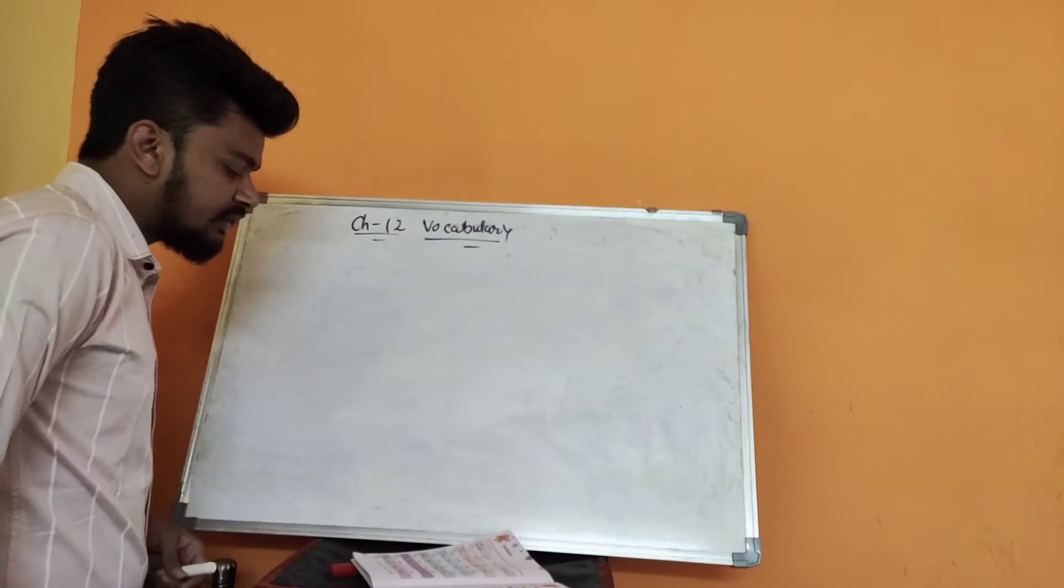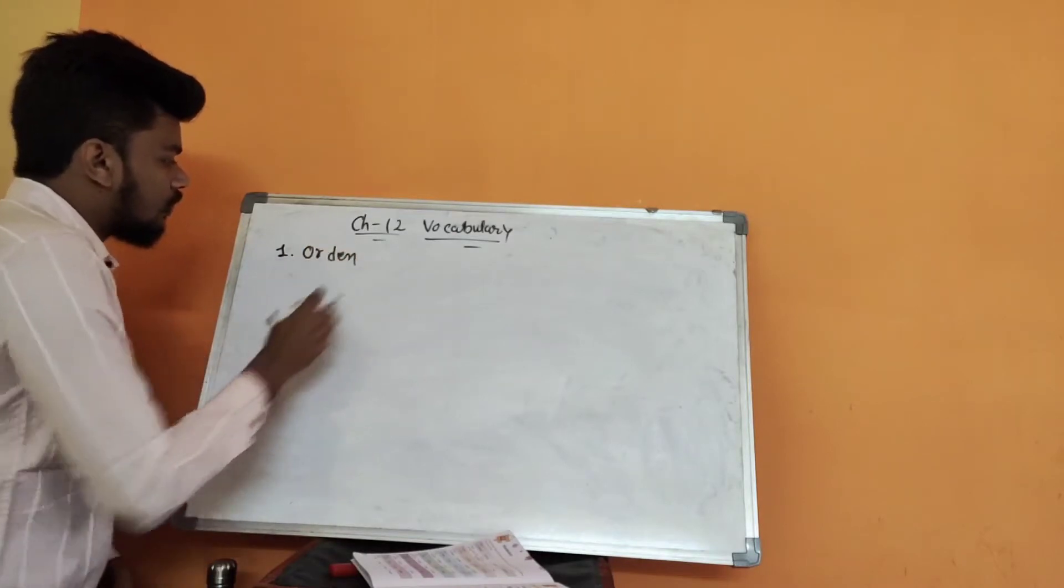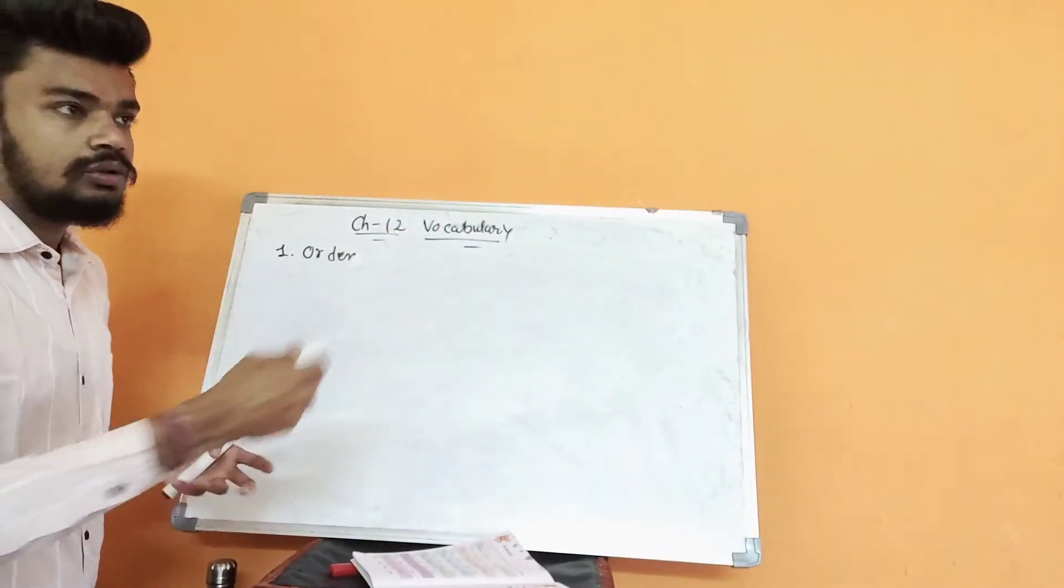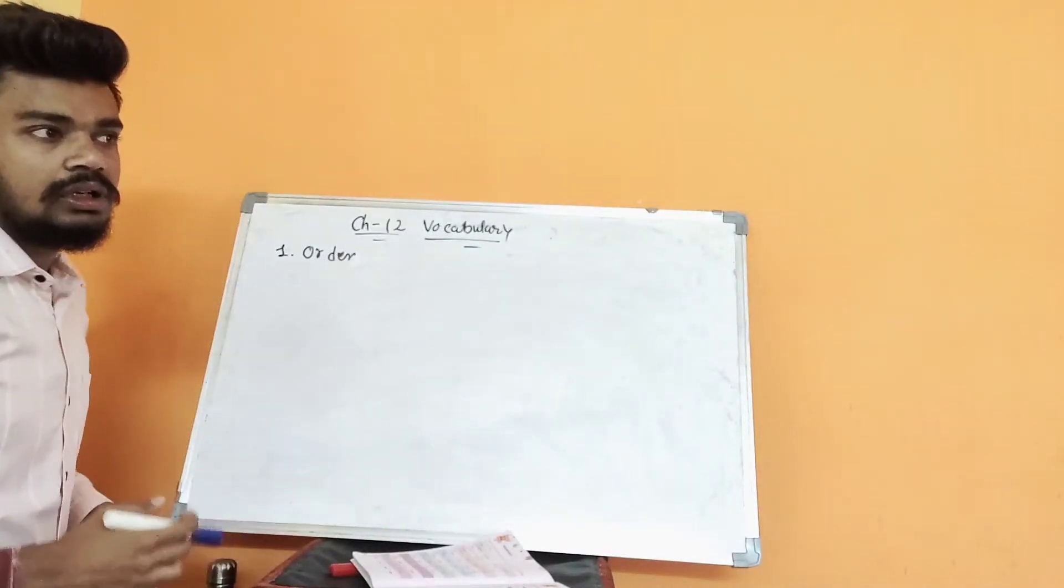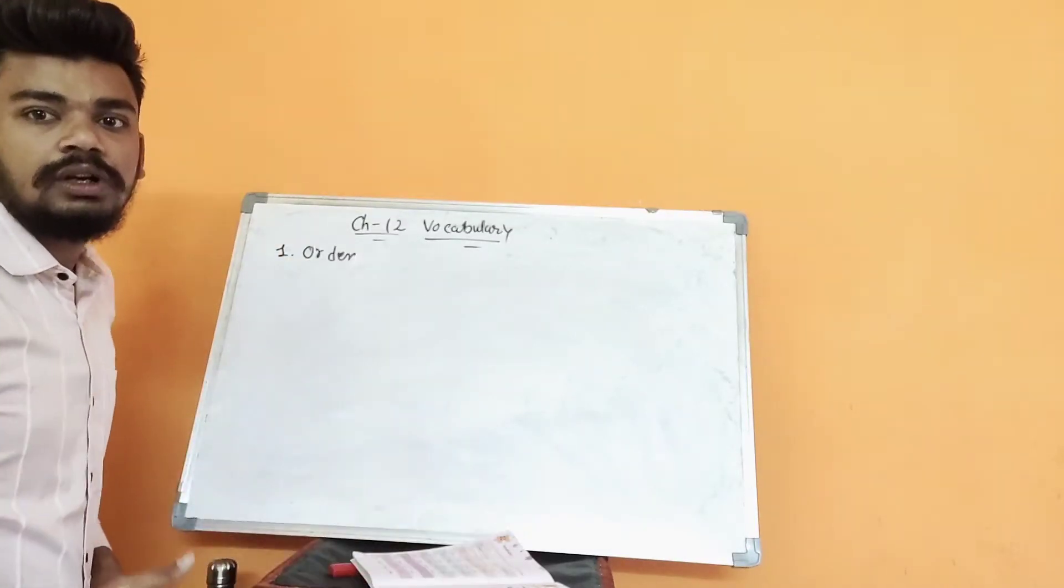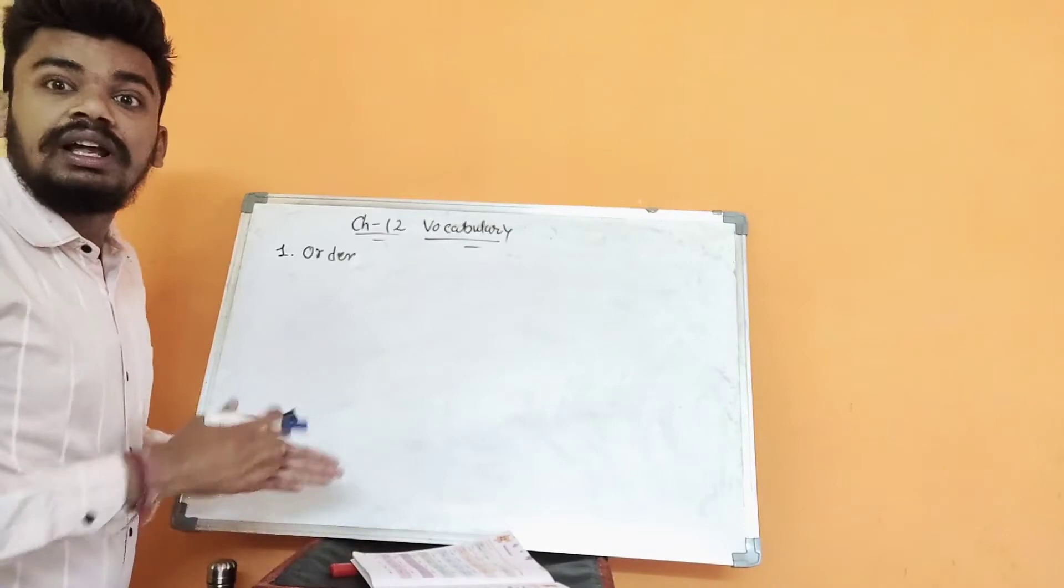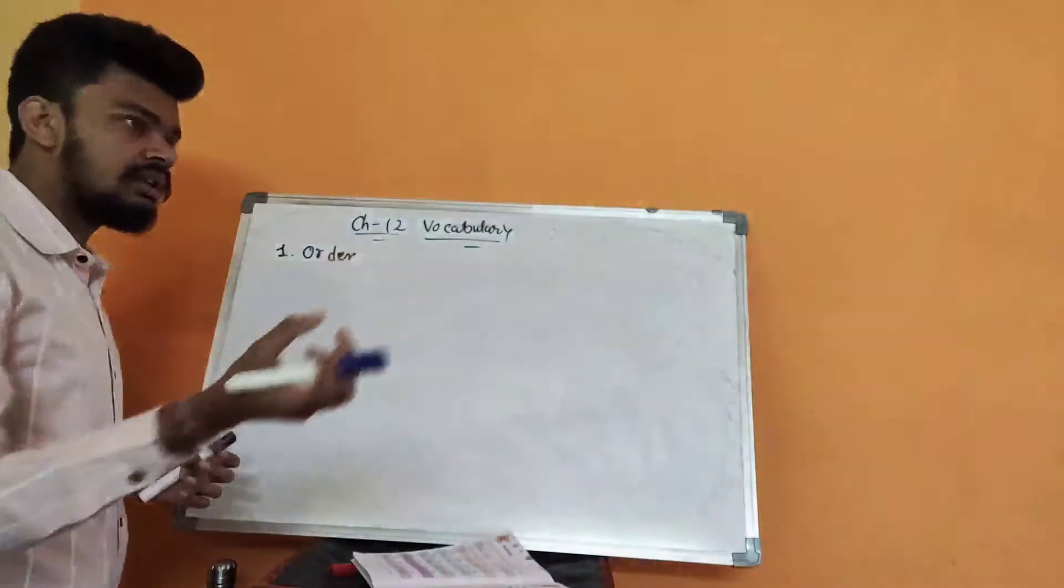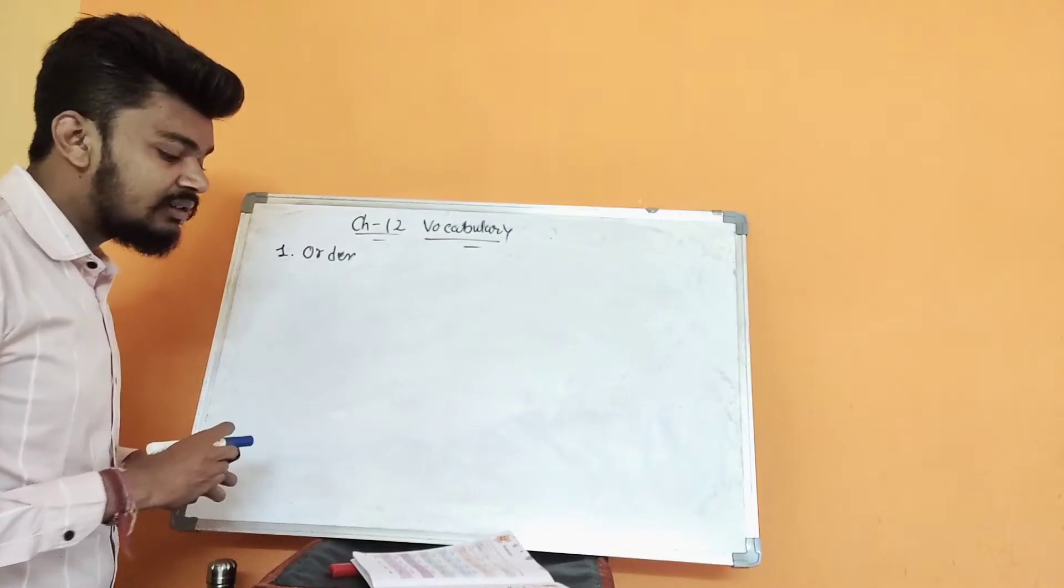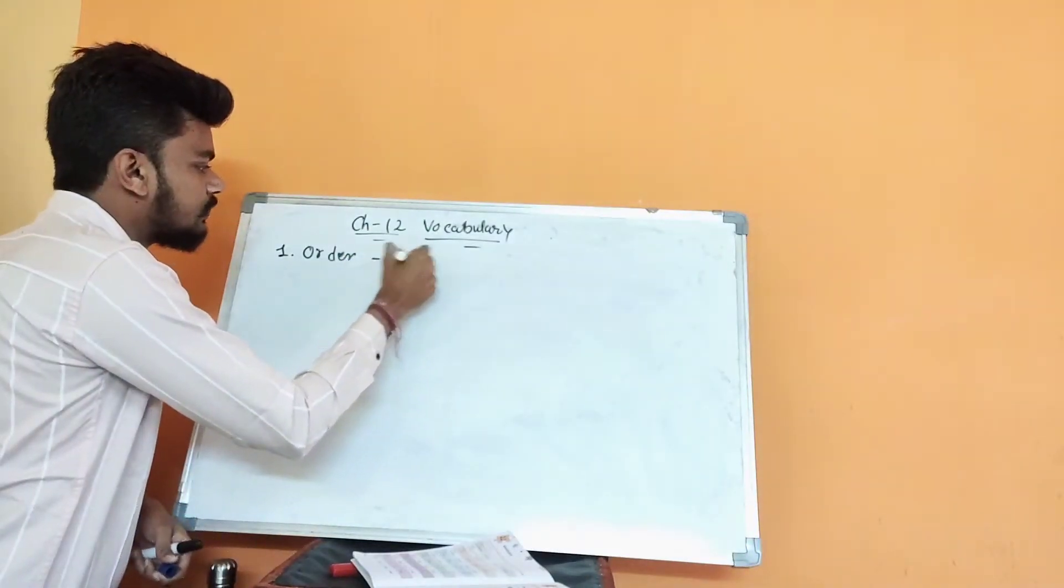The first word is given as order. Order means we have to use the two types of order, and we cannot give these kinds of options. Sequence is half of mine. The answer I got is option A, sequence.